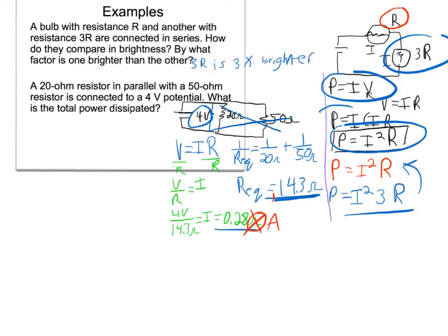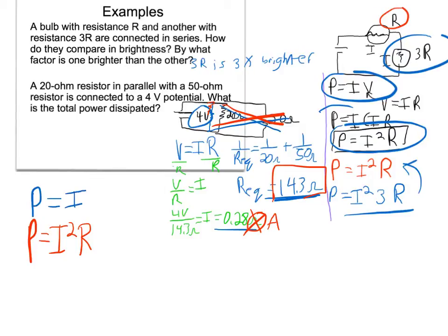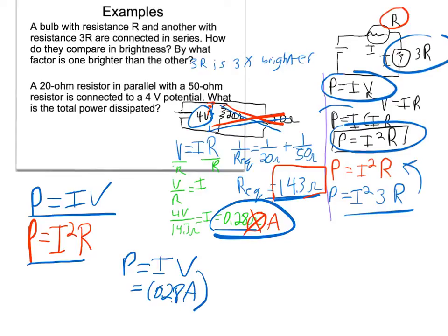That equivalent resistance is the same as replacing both resistors with one 14.3-ohm resistor, so we can use it in the power equation. We can use either P equals I squared R or P equals IV — both will work since we know resistance, voltage, and current. I'm going to use P equals IV: 0.28 amps times 4 volts gives a total power dissipated of 1.12 watts. I confirmed that P equals I squared R gives the same answer — you should verify that for yourself.